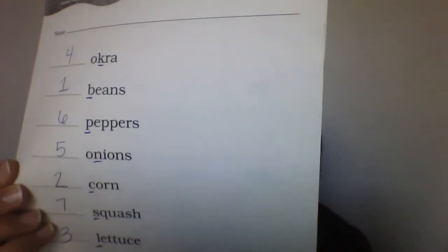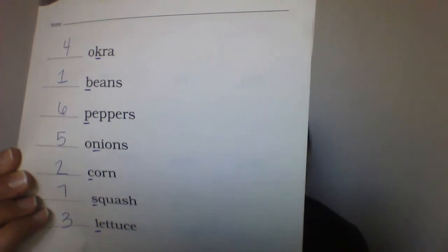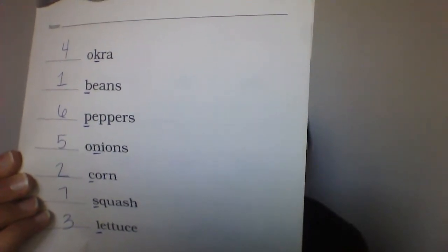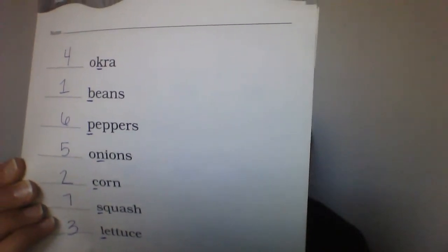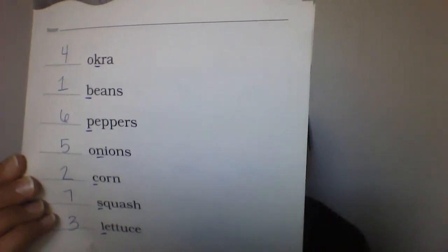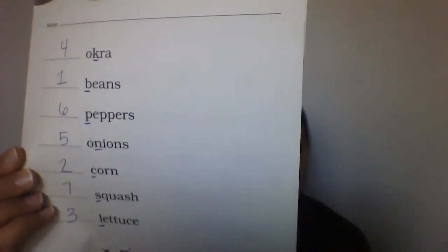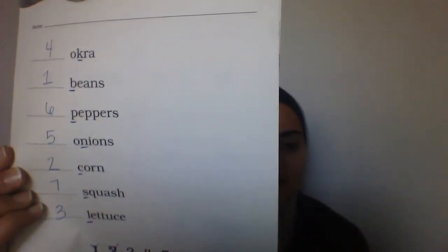Now that you've had a chance to do that, it looks like this. The first word was beans. The second is corn. The third is lettuce. The fourth is okra, because K comes before N. Then we have onions, because N comes after K. Then we have peppers — six is peppers, and seven is squash. They should be in this order. If you need some time to write this down, you can pause the video now. You guys are really good at putting words in ABC order.